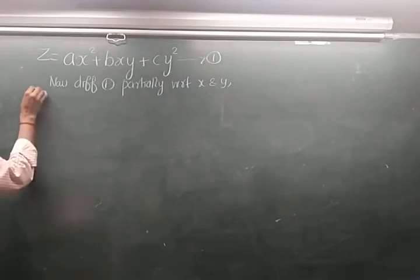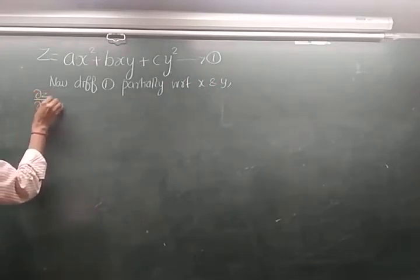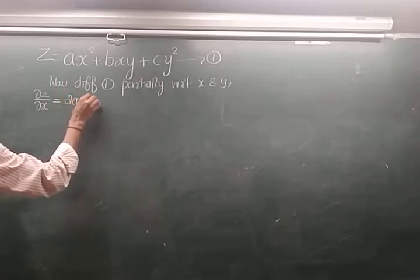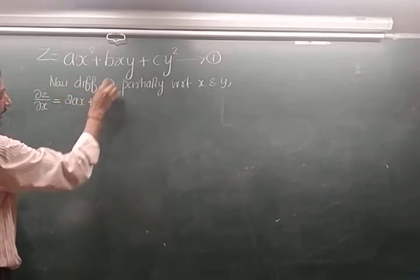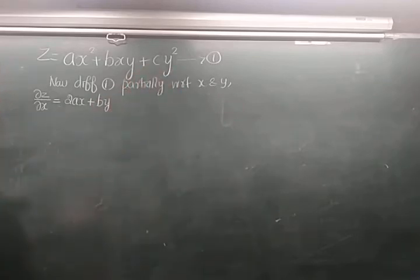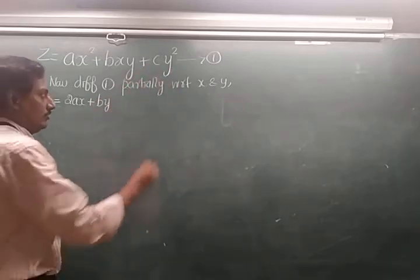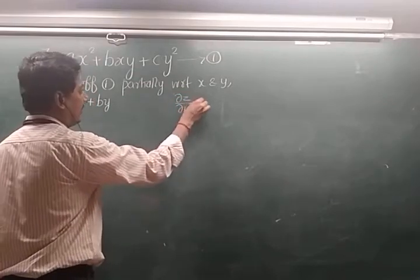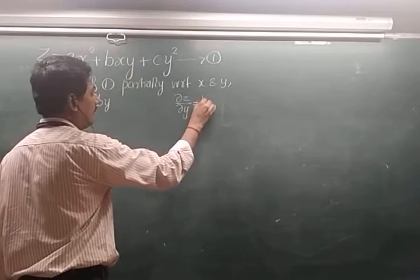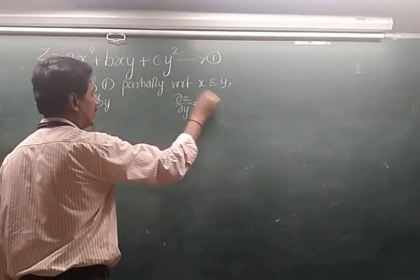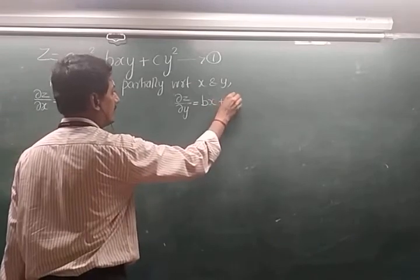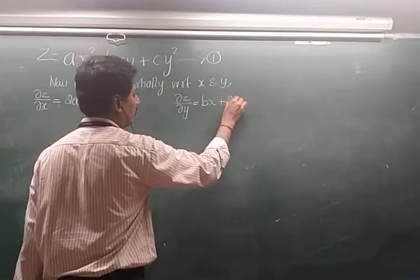Differentiating equation 1 partially with respect to x: ∂z/∂x = 2ax + by. The term cy² has no x, so it gives 0. Differentiating partially with respect to y: ∂z/∂y = bx + 2cy. The term ax² has no y, so it gives 0.